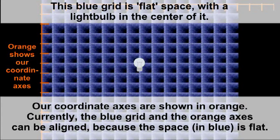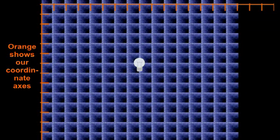Currently, the orange axes and the blue grid are lined up with each other. This is because the space is flat. Now let's turn the light bulb on and watch.